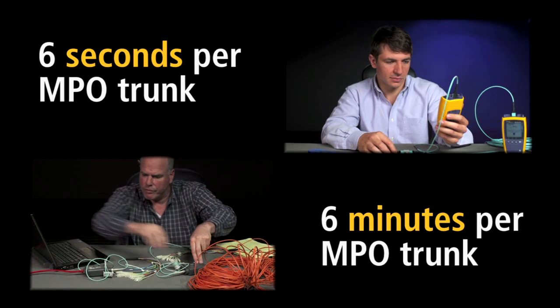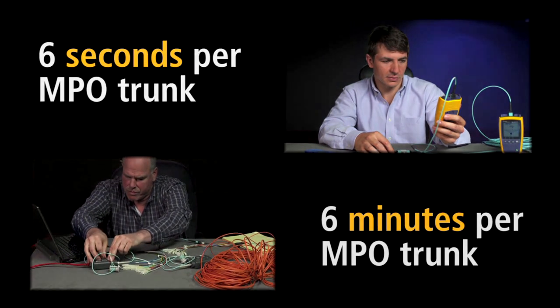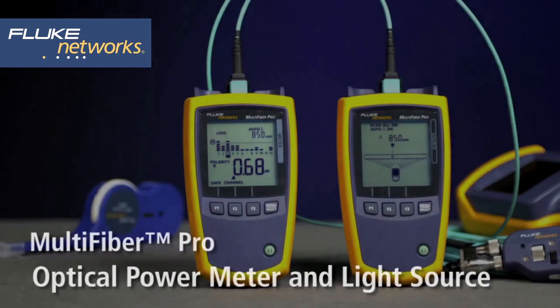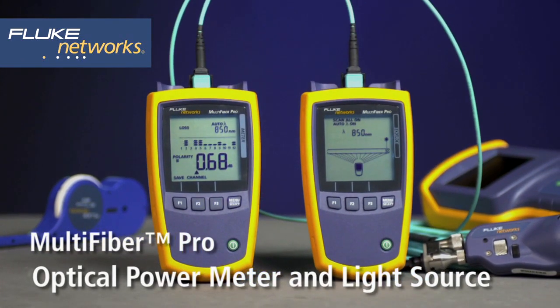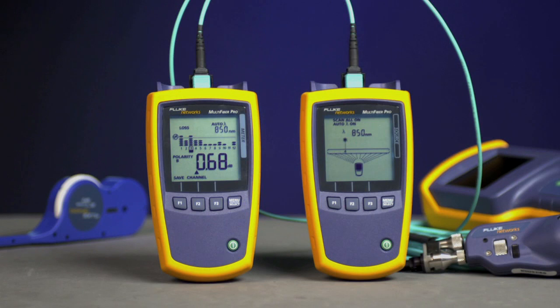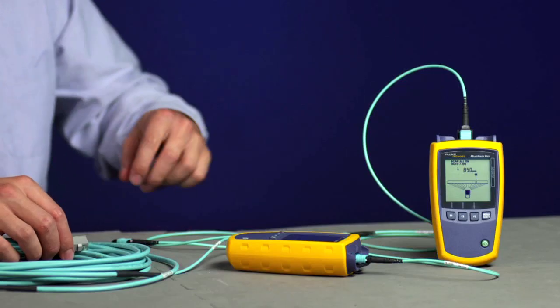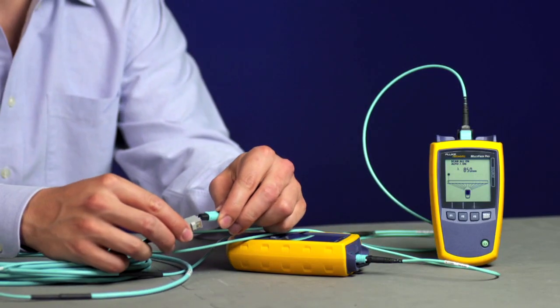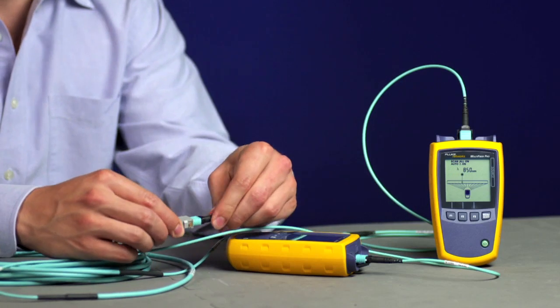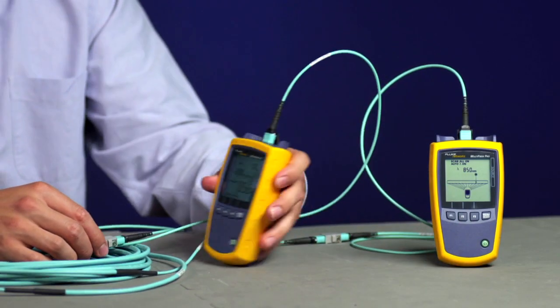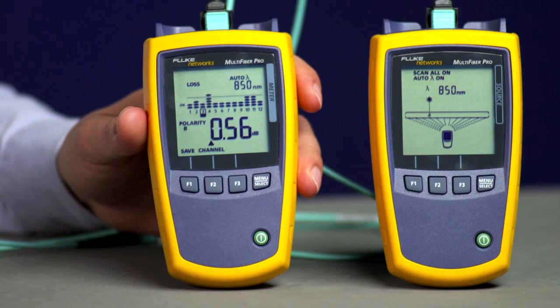There's a better way. Introducing the Fluke Network's Multi-Fiber Pro Optical Power Meter and Light Source. Unlike any other tester in the market, Multi-Fiber Pro is a true MPO connector fiber tester, able to simultaneously test all 12 fibers in an MPO trunk cable.